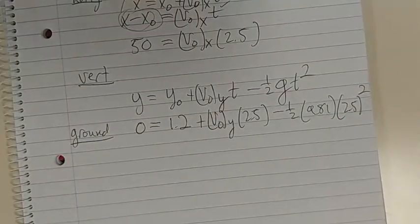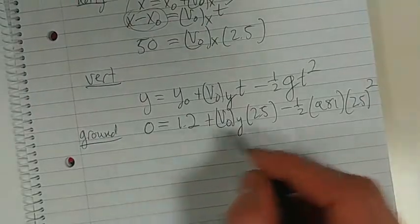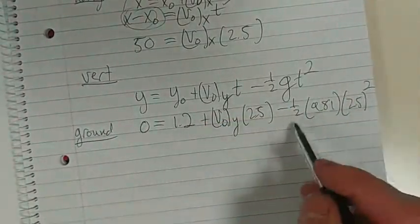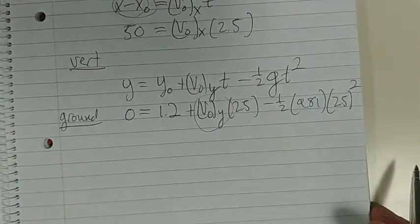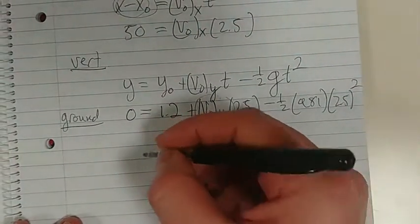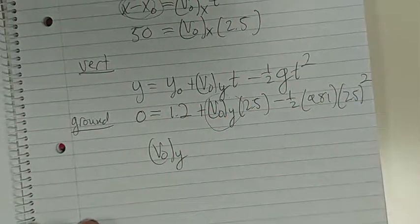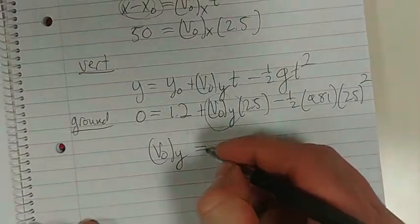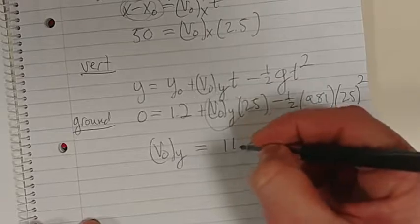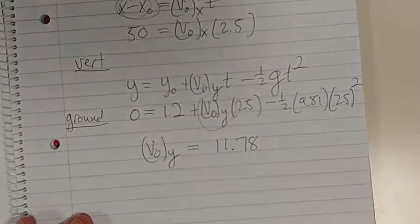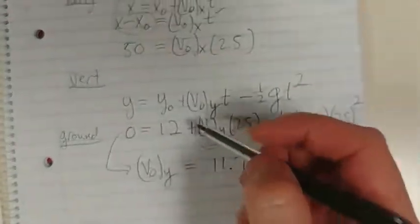Then, let's just solve. As you can see, the only unknown we have here is V0Y. So let us solve here. V0 in the Y direction should give us 11.78. So this thing becomes this. And I just want to backtrack here.